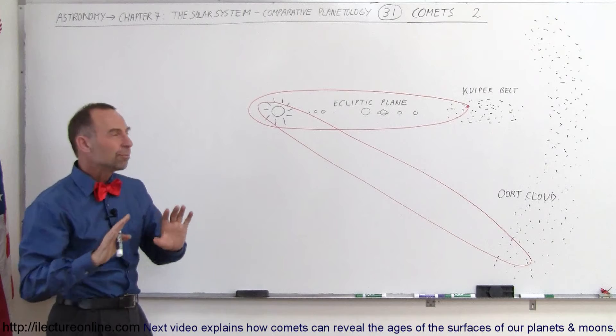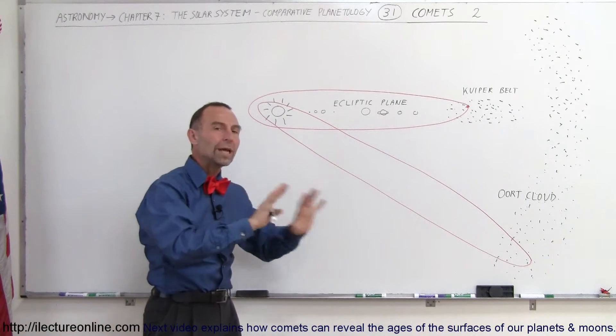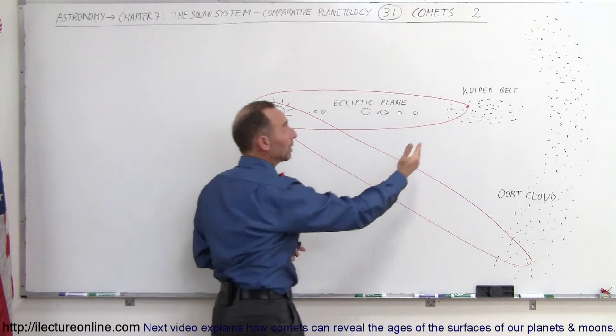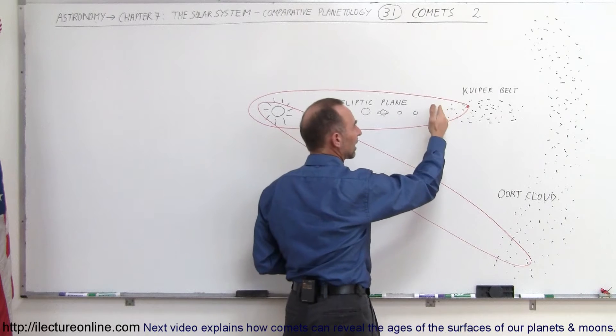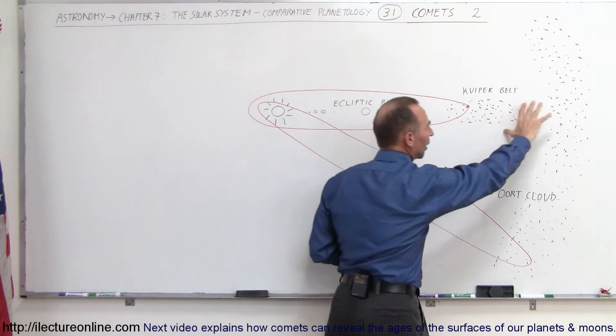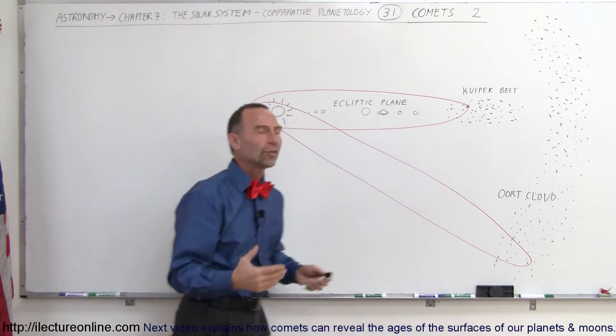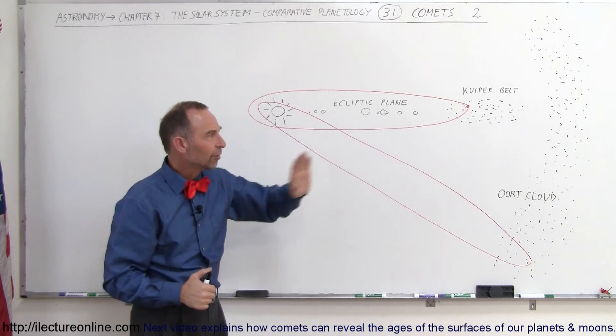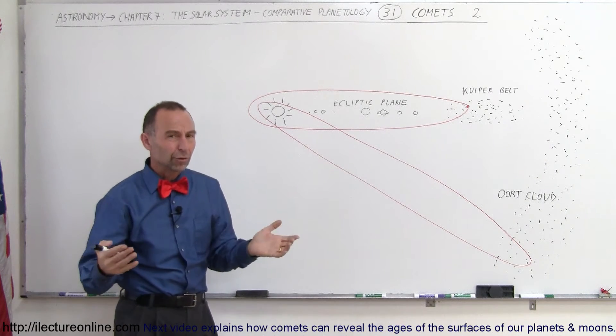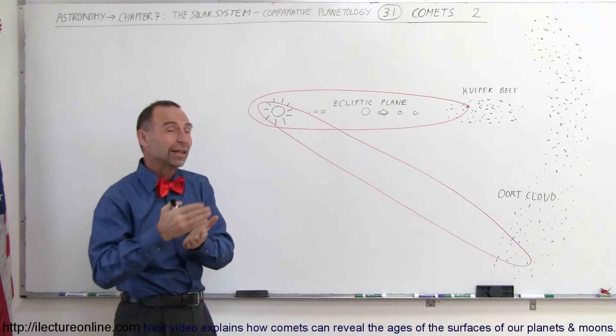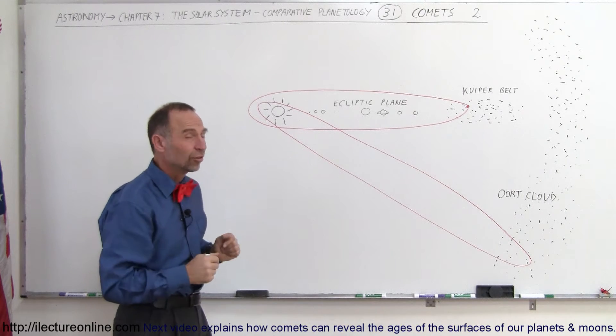And then there's another region beyond the Kuiper Belt, way beyond the Kuiper Belt. Typically speaking, the Kuiper Belt starts at about 40 astronomical units and probably goes out for several hundred, maybe as much as a thousand astronomical units out from the Sun. That would be 40 to a thousand times the distance between the Sun and the Earth. It's an enormous distance.